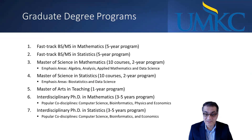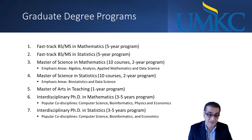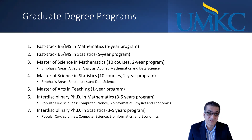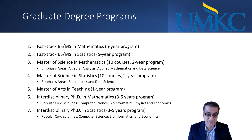The thesis option is eight courses plus a master's thesis. There is also a Master of Arts in Teaching, which certifies students to become a math teacher and is operated by UMKC School of Education. We also have PhD programs in mathematics and statistics. Those are interdisciplinary PhDs, which means the student gets a PhD and has to choose a co-discipline that makes their research interdisciplinary.